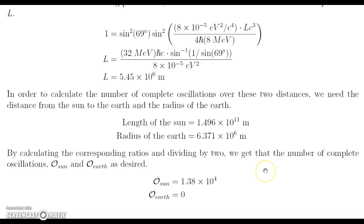And to calculate the number of complete oscillations from the sun to the earth, we find what we are going to denote by O sun. And to do this, we just take a ratio of the length between the sun and the earth and the length needed to have an oscillation. Then we're going to have to divide by two, because that will just be the total number of oscillations. However, we need two of them to get a complete cycle. So here we have that value, and that is O sun equal to 1.38 times 10 to the 4th.